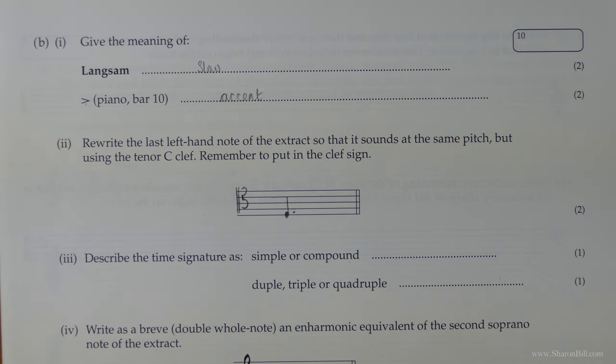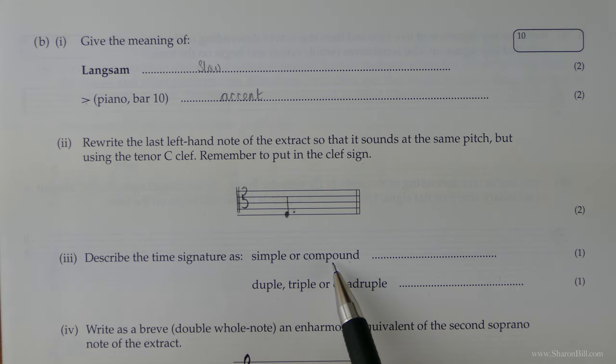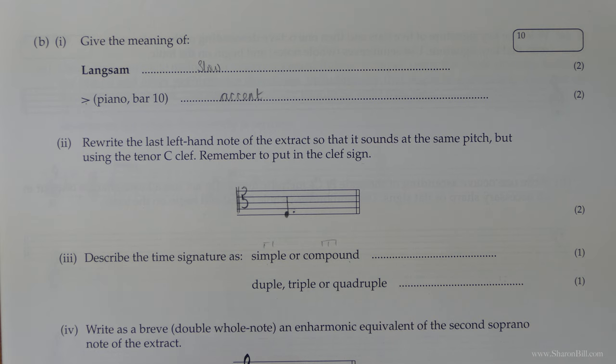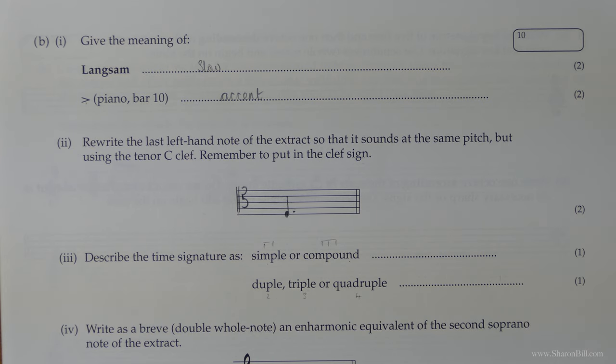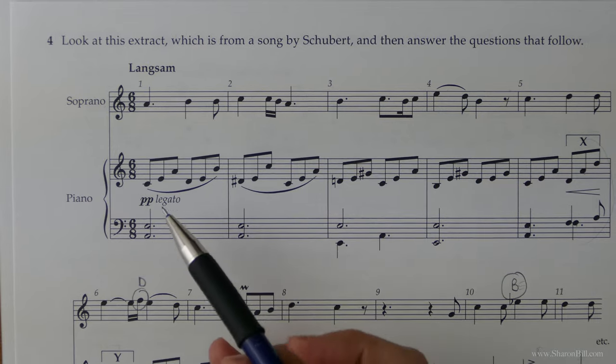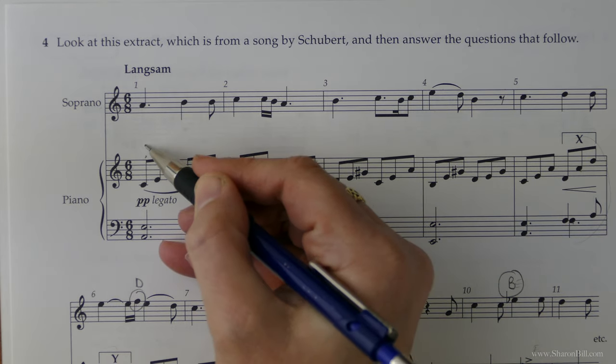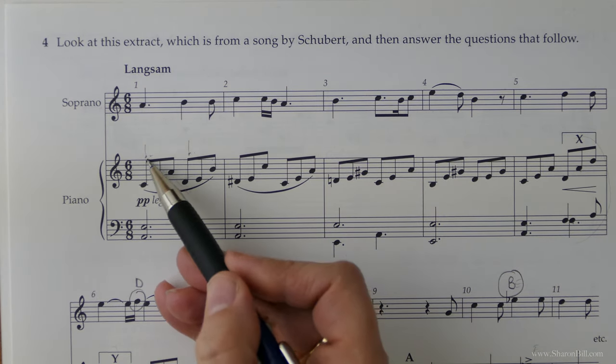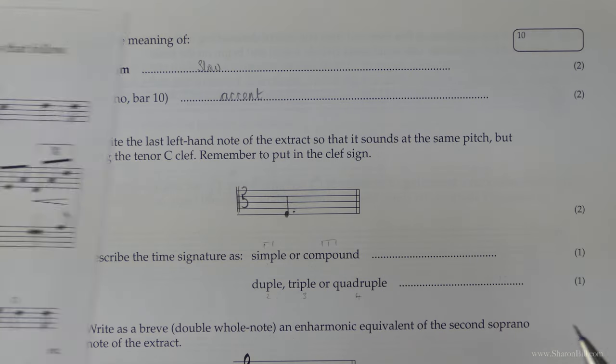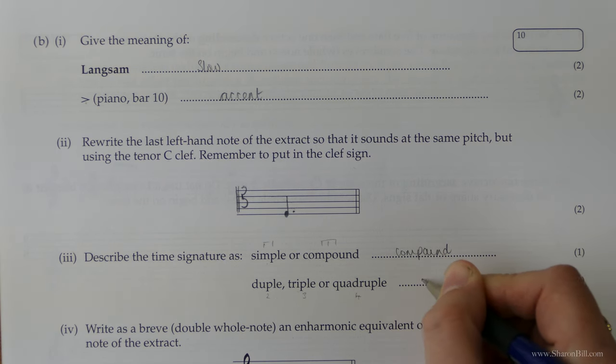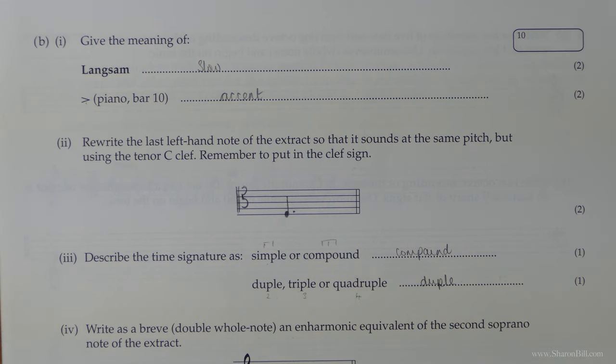Now we need to look at the time signature and we need to say if it's simple or compound time, duple, triple or quadruple. Simple time is in groups of two, compound time is in groups of three. There are two beats per bar, three beats per bar or four beats per bar. So we're in six eight and we can see straight away we're in compound time. We're in groups of three. There are two groups of three. So we're in compound time, two beats per bar and so it's duple.